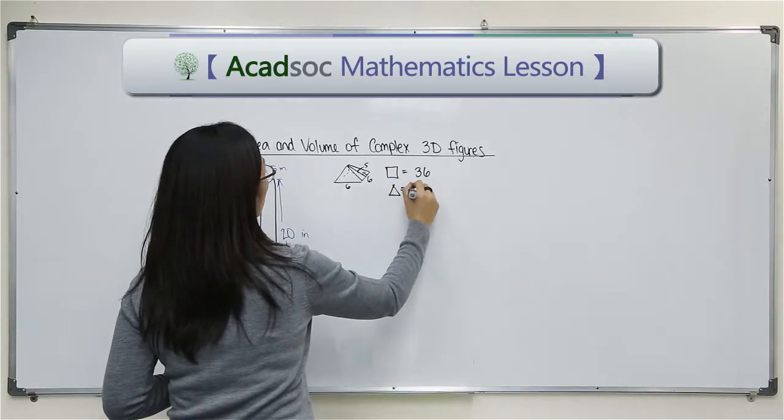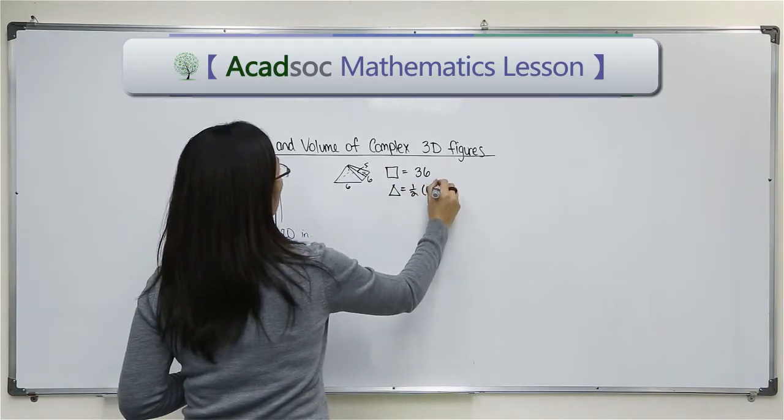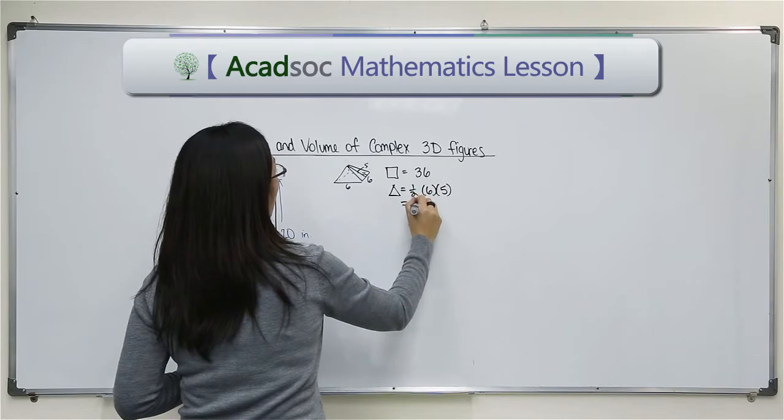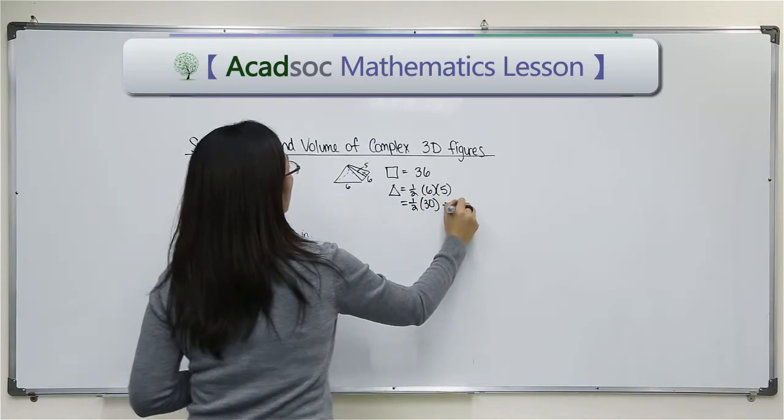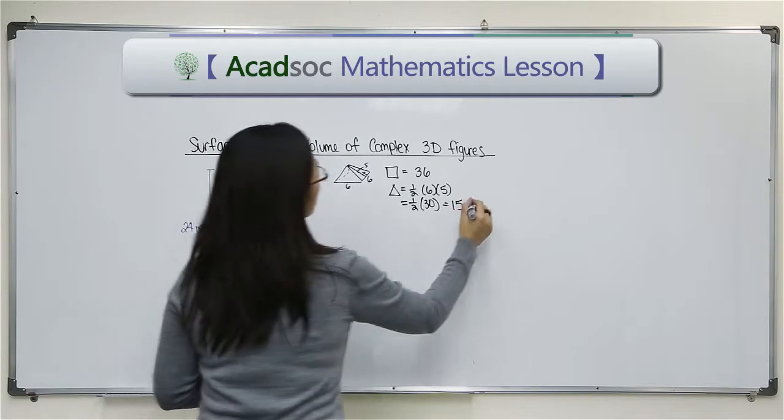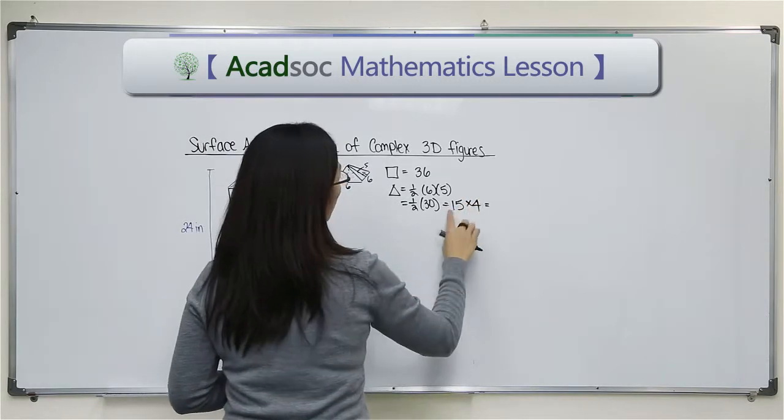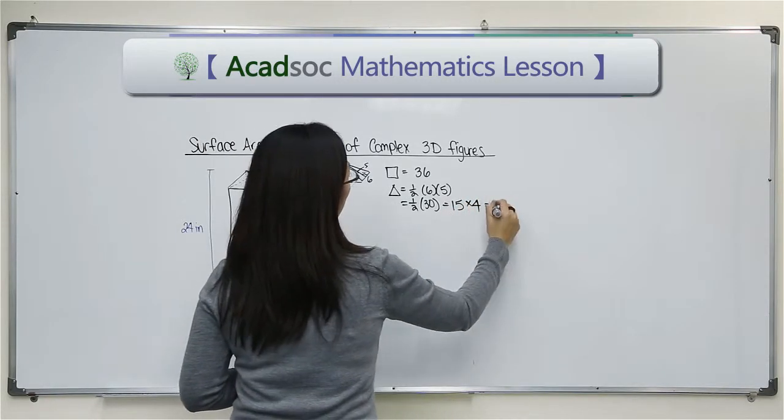So to find the triangle, it will be half times base times height. That would be half of 30, which would be 15. Since I have four of these triangles, I multiply it by four and that would be 60.